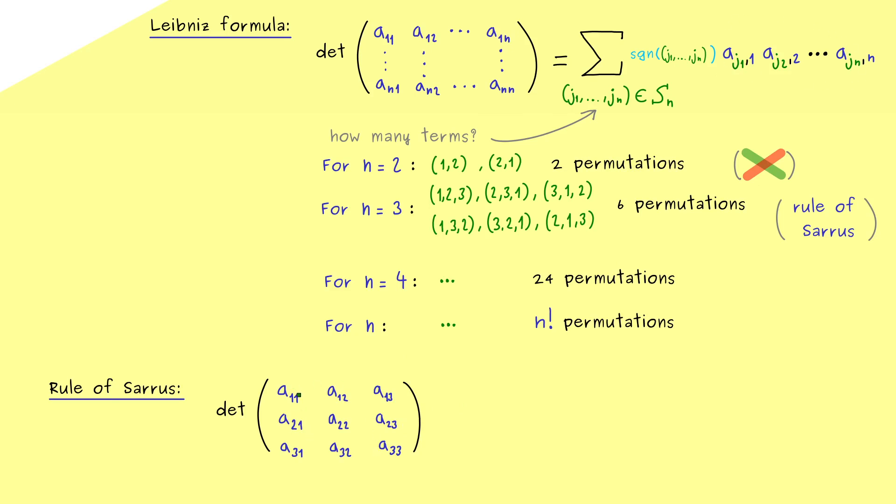Ok and now I would say let's apply the Leibniz formula by constructing these products. So for example if we want a product where a11 is included we are not allowed to include any of the elements in this column or in this row. Hence then we have to use an entry from this lower right part here. For example a22. And then you see we are also not allowed anymore to use any of these elements here. Therefore only a33 remains. In other words multiplying the main diagonal gives us one product already. And indeed you should see it's a positive permutation. Therefore the sign for this term in sum is plus.